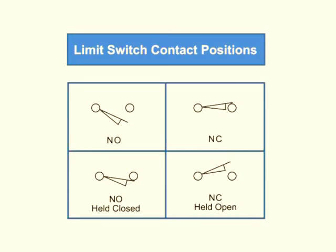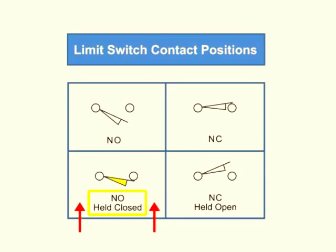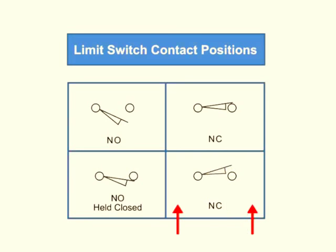In this schematic diagram, the direction from which a force must contact the switch's actuator is indicated by the triangle below or above the switch. A normally open limit switch will remain open until the actuator is acted upon by an outside force or object, thus holding it closed. A normally closed limit switch will remain closed until an outside force or object holds it open.